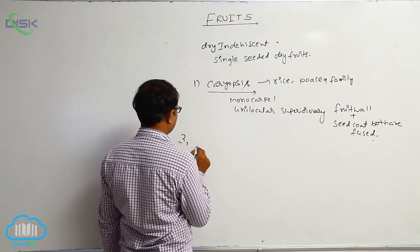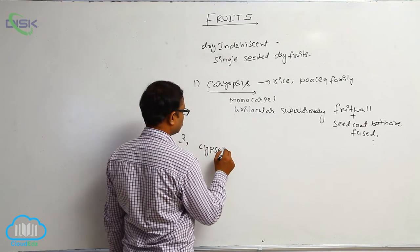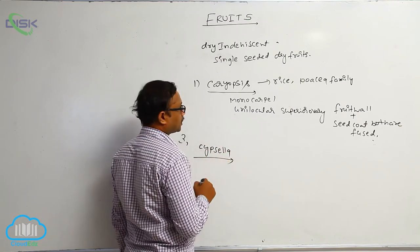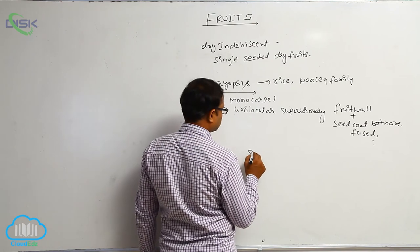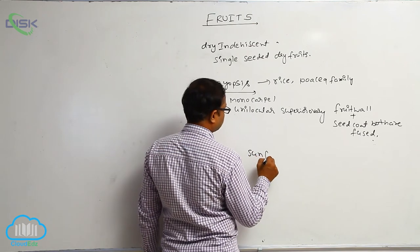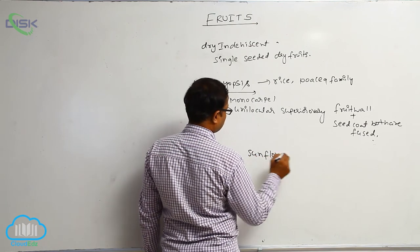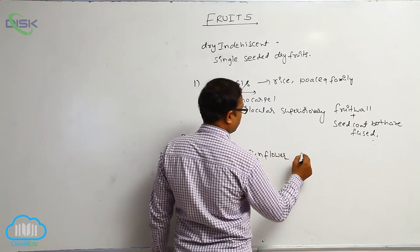The second type is cypsela. Example: sunflower, from the Asteraceae family.